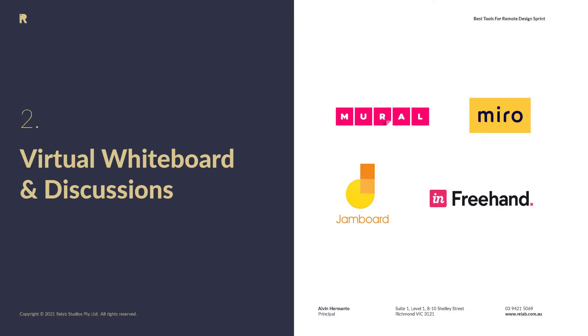The second category is about virtual whiteboards and discussion jam boards. One of the products is Google Jamboard, which you can use as part of your Google Meet setup. The Jamboard can help you do quick jam sessions, but what you really want during the sprint week is a virtual whiteboard or a virtual workshop room.